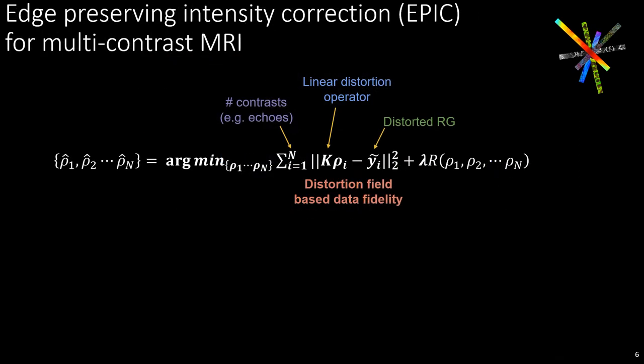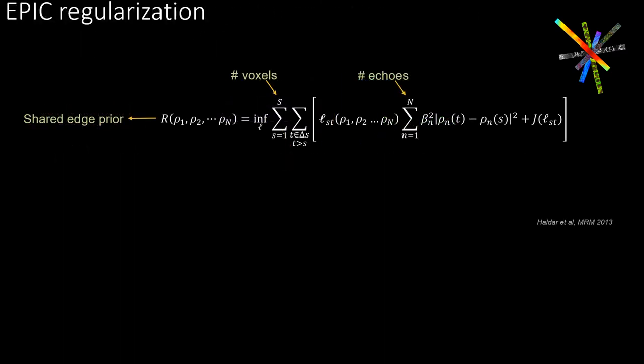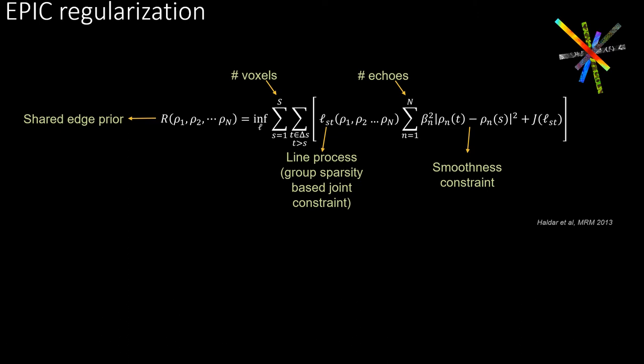Our proposed method, edge preserving intensity correction — in short, EPIC — jointly corrects multi-contrast images by constraining the distortion field based data fidelity with an image based regularization function that takes all the contrasts into account jointly. EPIC uses the shared edge prior regularization, first proposed in the diffusion MRI reconstruction literature. This function can be thought of as multiplying a quadratic smoothness constraint with a group sparsity baseline process prior, with an additional assumption that edges are rare in MRI images.